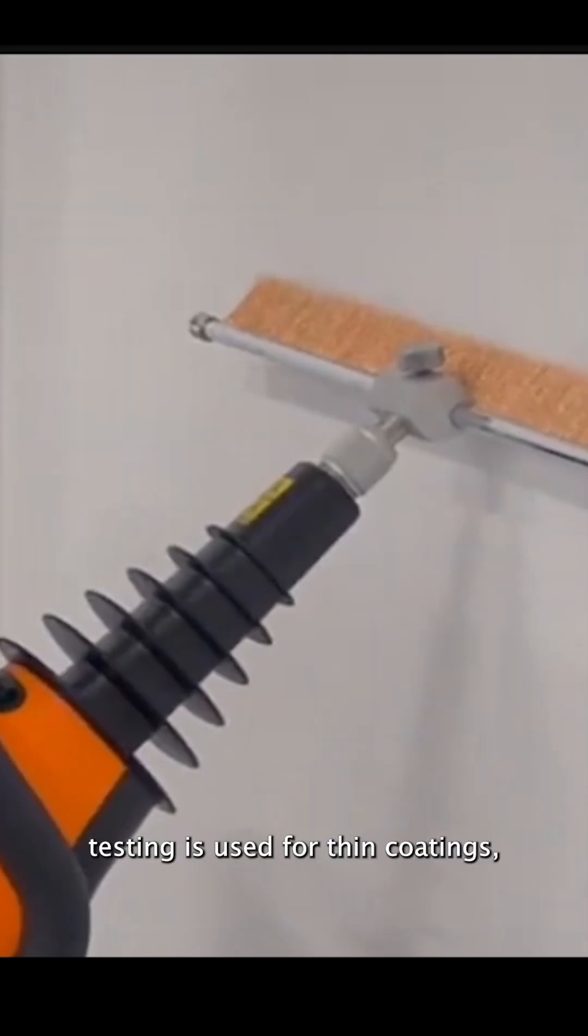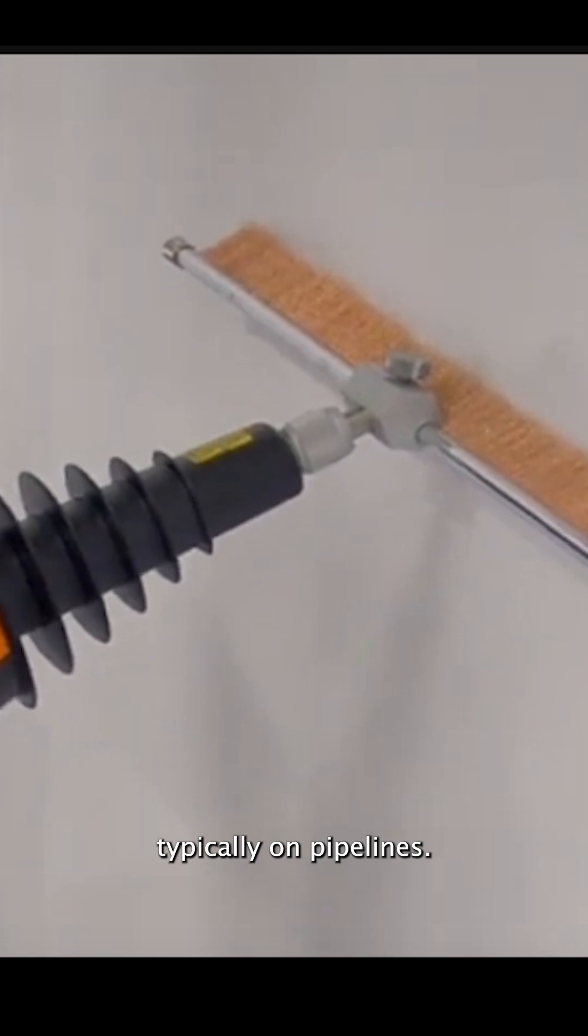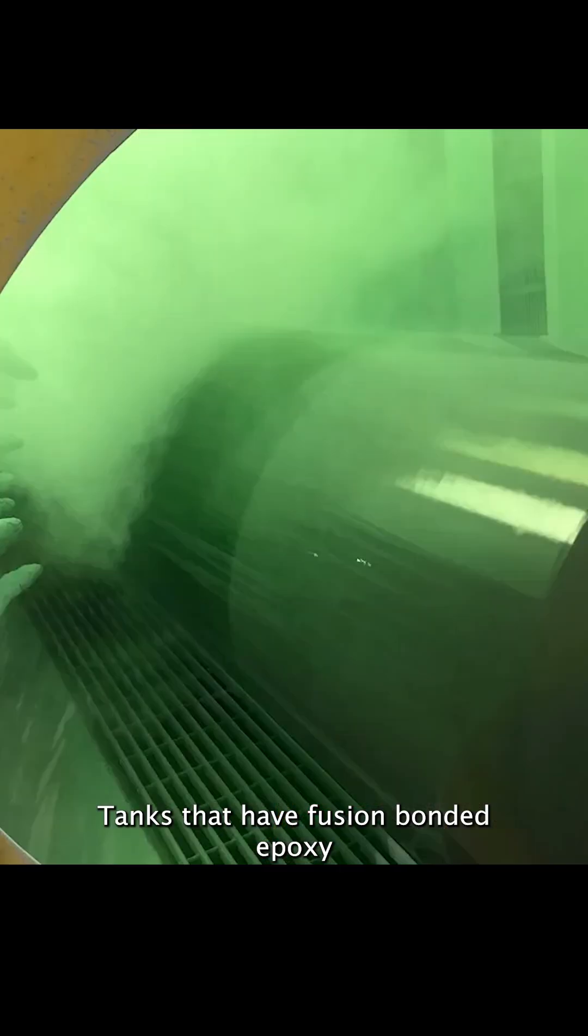Low-voltage testing is used for thin coatings, while high-voltage testing is used for thick coatings, typically on pipelines and tanks that have fusion-bonded epoxy.